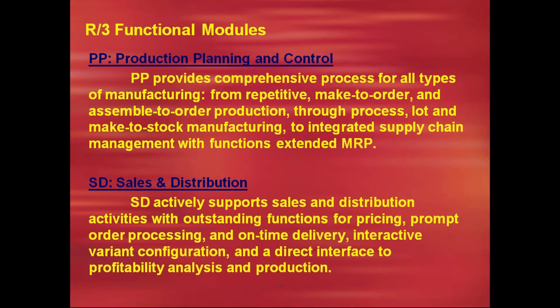PP stands for Production Planning. The main agenda of this department is production of finished material by performing different types of operations. In production planning, you have different types of planning activities: make-to-order planning and make-to-stock planning. Make-to-order means whenever a customer places an order, then only you go for planning. The company will not plan unless it gets the order from the customer, and production starts based on customer specifications — so there is an impact of the sales order.